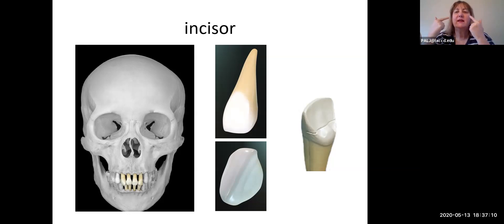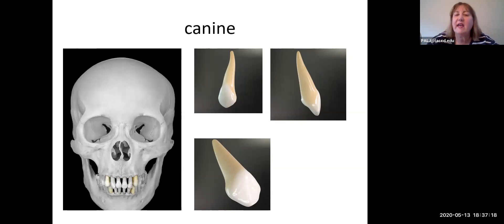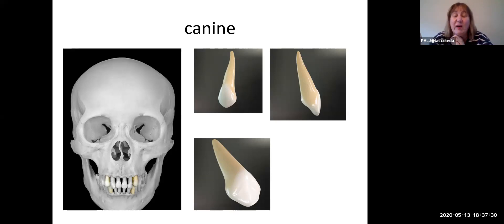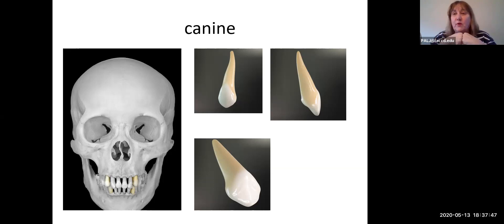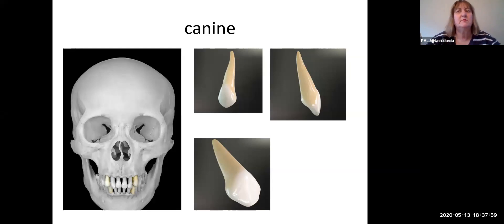Moving laterally and posteriorly, the third tooth on each side — and there's only one of them — is called a canine. Its root also looks like an upside-down pointed ice cream cone, but the exposed part is pointy as well. Instead of a thin cutting edge like the incisor, the canine is a poker — it's going to be doing some ripping. They're called canines because they're super prominent on dogs; you can also see them on alligators and crocodiles.